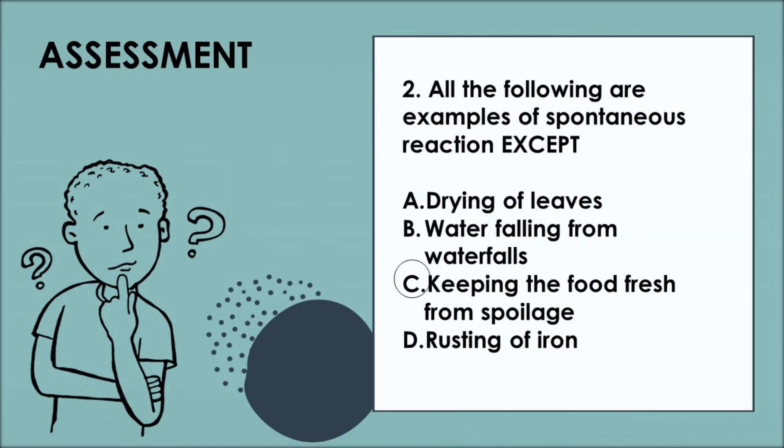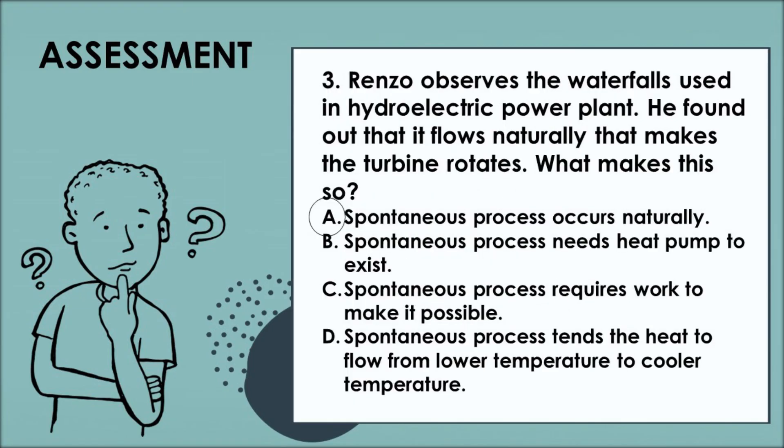Number 2. All of the following are examples of spontaneous process except... Letter C. Keeping the food fresh from spoilage. Number 3. The water that falls from a waterfalls occurs naturally. That is why the answer is Letter A. Spontaneous process occurs naturally.